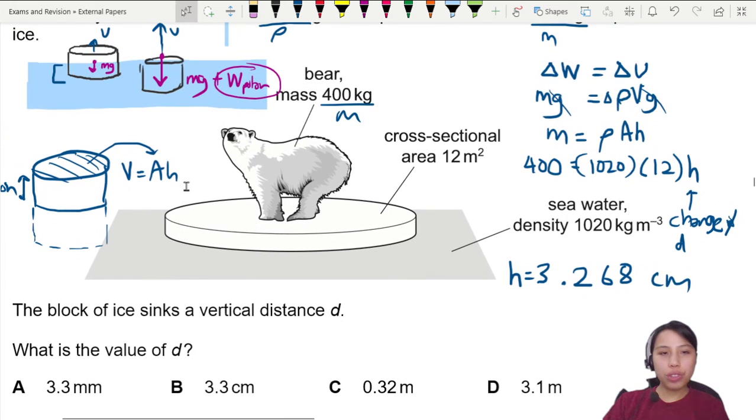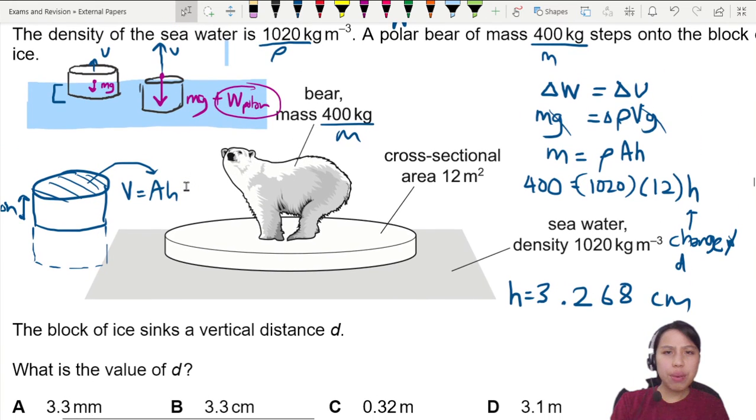Okay, so we can look for the answers. 3.268, that would be the one down here. One is millimeter, one is in cm, please be very careful. This one is in cm, so 3.3 cm. Best choice is B. That's how we can find this one.